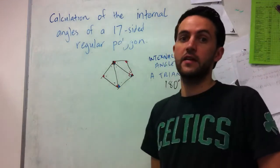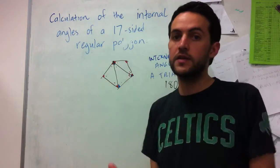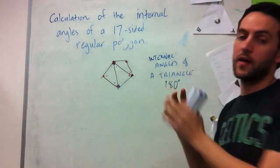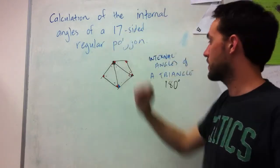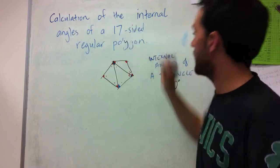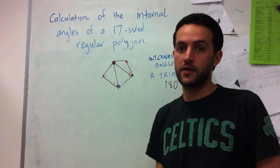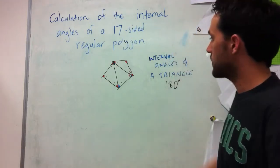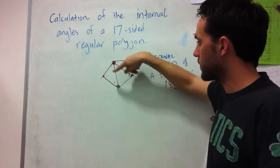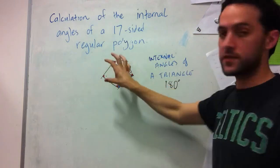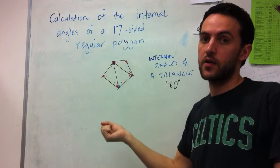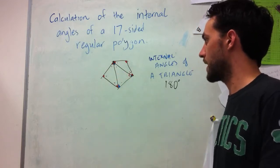We can use that fact in order to calculate the total internal sum, and then because we're dealing with regular polygons, we can just divide by the total number of angles. One of the things we note is that we can always fit in the number of triangles for an n-sided polygon—we get is always two less than the number of sides.